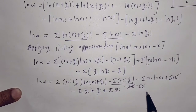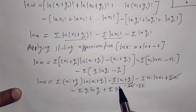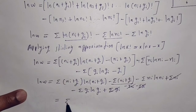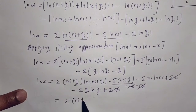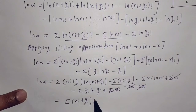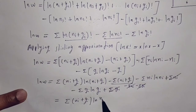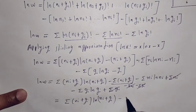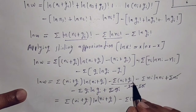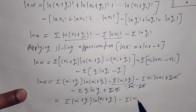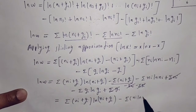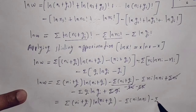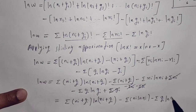After cancellation, we get: ln(W) = summation of (ni + gi)·ln(ni + gi) minus summation of ni·ln(ni) minus summation of gi·ln(gi).